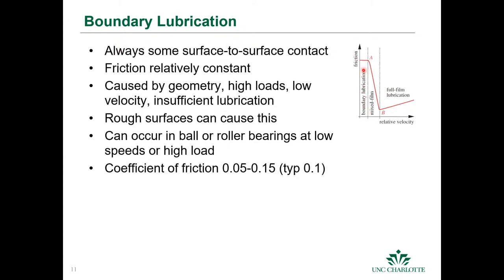In boundary lubrication there's always some surface-to-surface contact and friction is usually constant because it's sliding friction. Boundary lubrication is caused by specific geometry, high loads, low velocity, or insufficient lubrication. It can occur in roller or ball bearings at low speeds or high loads. For boundary lubrication, typical coefficient of friction values are 0.05 to 0.15, with a typical value around 0.1.